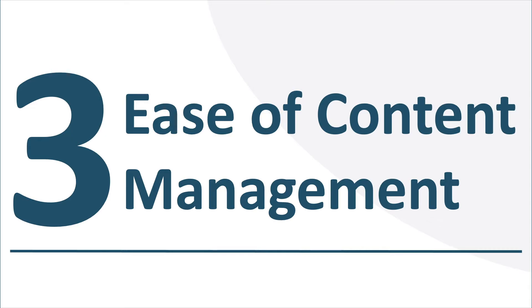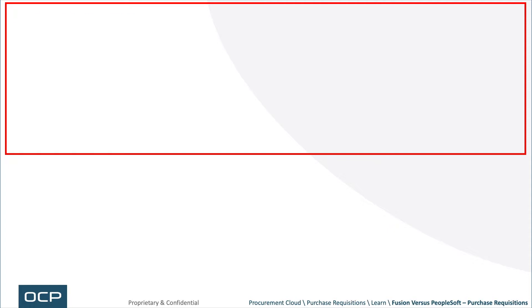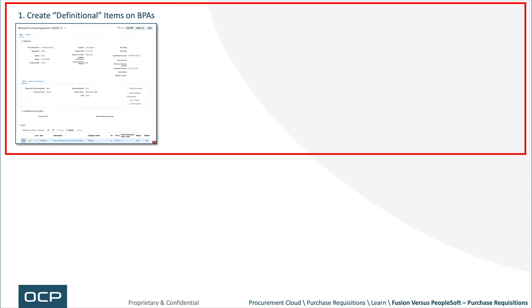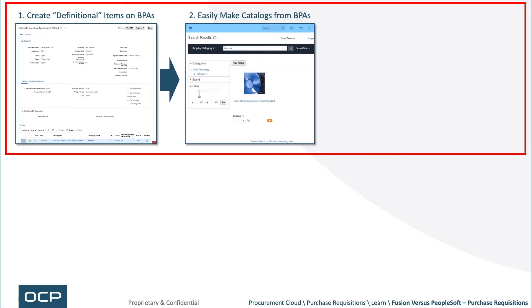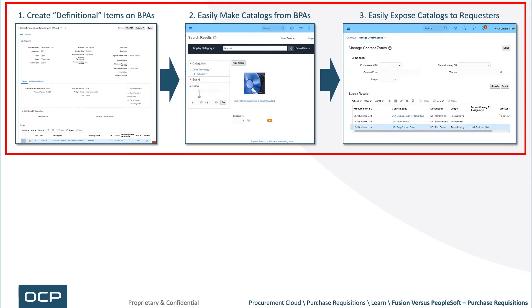Now that we've talked about content tools, how easy are they to manage? In PeopleSoft, creating an item required defining it like an inventory item — purchasing attributes, etc. In Fusion, that same PIM functionality exists, but you also have an easier, faster, lighter way to create what's called a definitional item. You simply create an agreement — like a procurement contract — and each of those lines can be exposed as catalog items. Step one: create the BPA. Step two: turn the BPA into a catalog. Step three: expose the catalog to requesters. Very easy, and all can be done by procurement rather than IT.